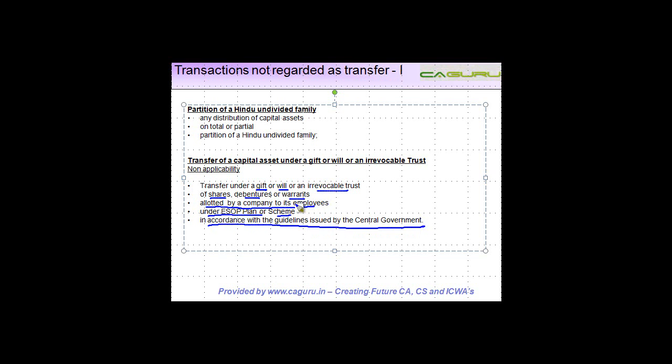Now what this simply means is that if there are any ESOPs or employee stock options which are given by one company, which could be shares, debentures or warrants, which are given to an individual and he transfers these ESOPs under a gift or a will or an irrevocable trust, that is not going to be exempt from the definition of transfer and hence will be chargeable to income tax.